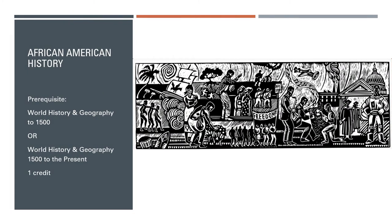Our first elective option is African American History. This course focuses on the African American experience and explores topics including the transatlantic slave trade, the role of slavery and race in the nation's founding, the abolitionist movement, the Jim Crow era South, and the civil rights movement. This course concludes with a capstone project, giving students the opportunity to explore a specific topic within African American history that is of unique interest to them.